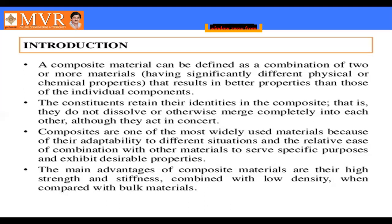The main advantages of composite materials are their higher strength and stiffness. These are high-strength and high-stiffness materials combined with low density when compared with bulk materials. That is why these are very important materials in engineering.